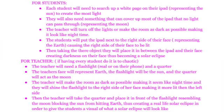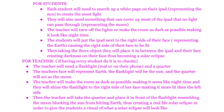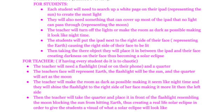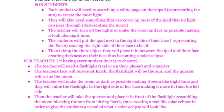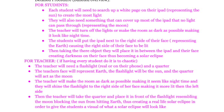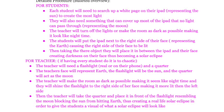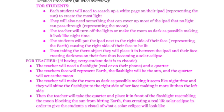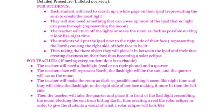If having every student do this is too chaotic, the teacher can simply take a flashlight — whether real or on their phone — and a quarter. The teacher's face will represent the Earth, the flashlight will be the sun, and the quarter will act as the moon. The teacher will make the room as dark as possible, shine the flashlight to the right side of their face making it more lit than the left side. Then the teacher will take the quarter and place it in front of the flashlight, resembling the moon blocking the sun from hitting the Earth, thus creating a real-life solar eclipse to give the students a visual of what a solar eclipse looks like.